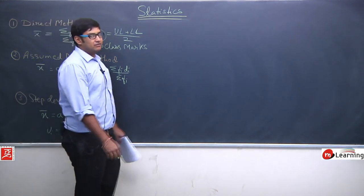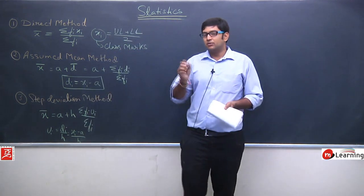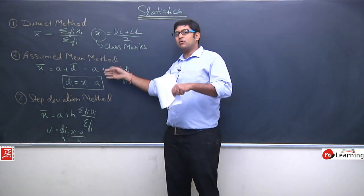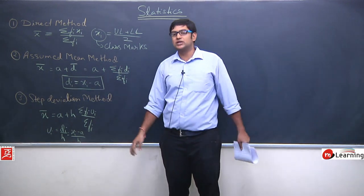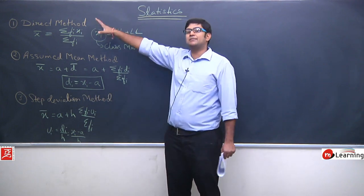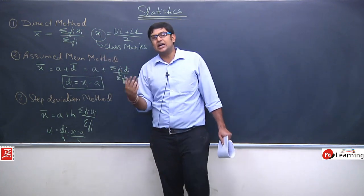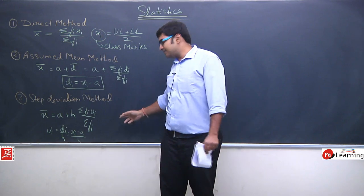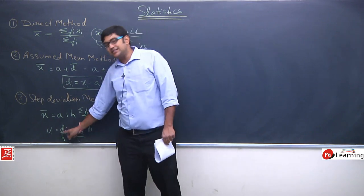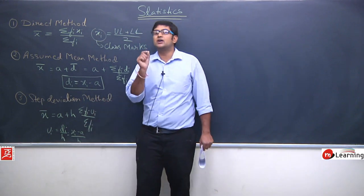Here d is the deviation, and if we divide the deviation by the class interval h, we get the step deviation u_i, which equals d_i upon h, or equivalently x_i minus a upon h. So we have used and understood these three methods. The direct method involves the most calculation, and the direct and assumed mean methods are always applicable.